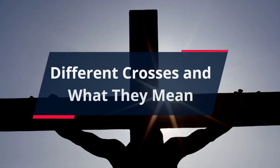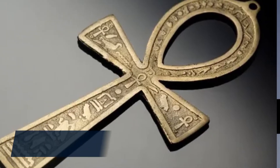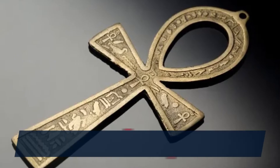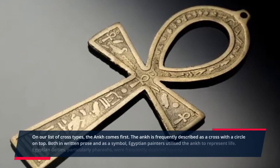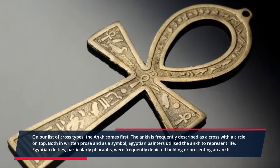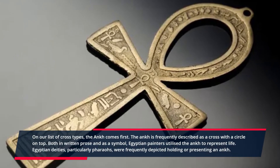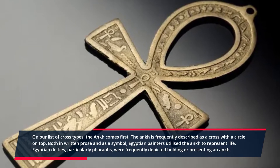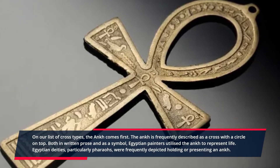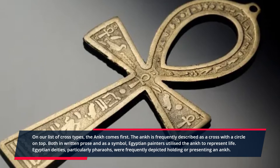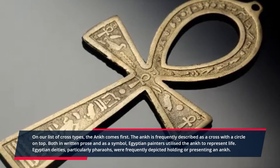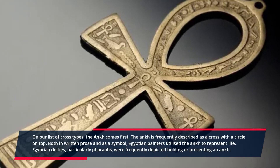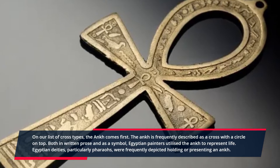Different crosses and what they mean. Number one: the Ankh cross. The Ankh is frequently described as a cross with a circle on top, both in written prose and as a symbol. Egyptian painters utilized the Ankh to represent life, and Egyptian deities, particularly pharaohs, were frequently depicted holding or presenting an Ankh.